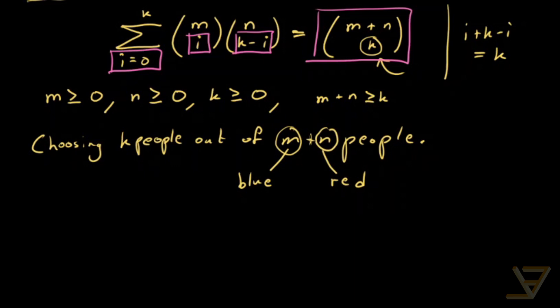Then what happens is that if you want to choose k people then you can do case work on how many people you're choosing. So you're choosing k people but i of them are chosen from the m people with the blue shirts and i can be equal to 0, 1, 2, all the way through to k.